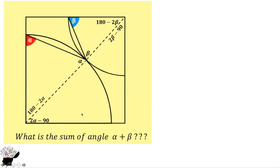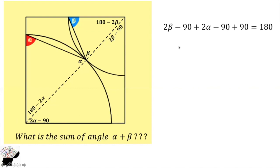The sum of the angles in this right angle triangle should be 180. So we get: 2 beta minus 90, plus 2 alpha minus 90, plus this 90 degrees, equals 180. Now we know that minus 90 plus 90 equals zero, so we get 2 beta minus 90 plus 2 alpha equals 180.